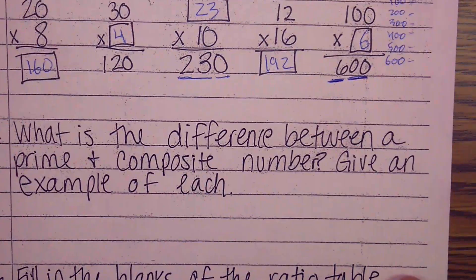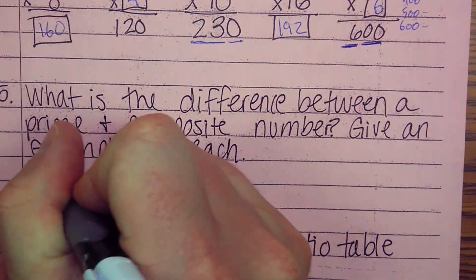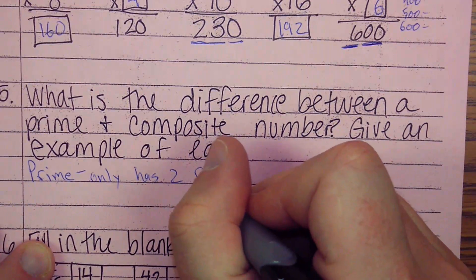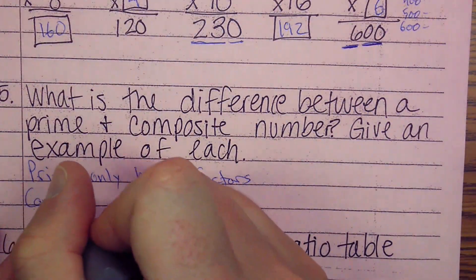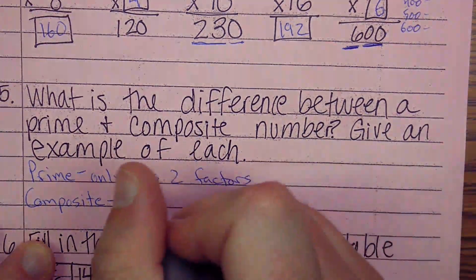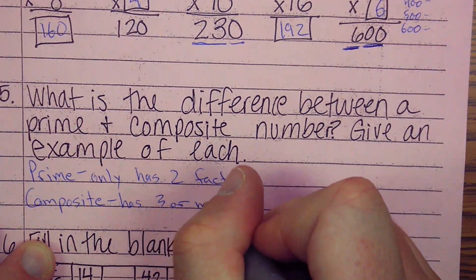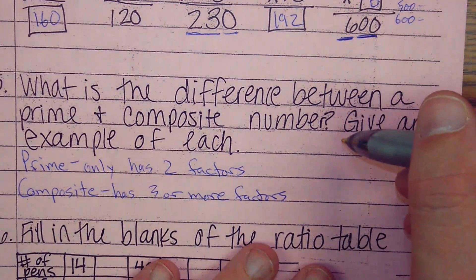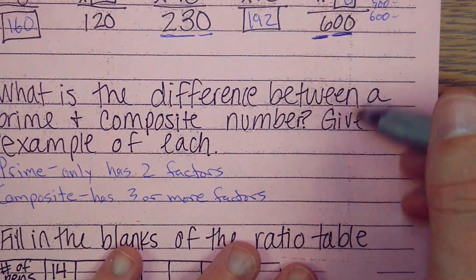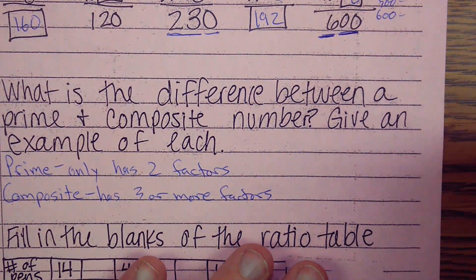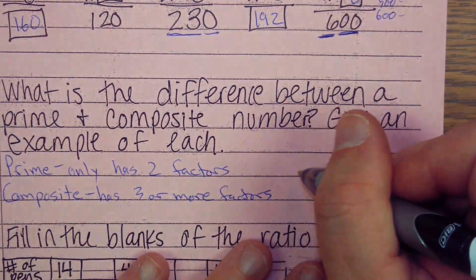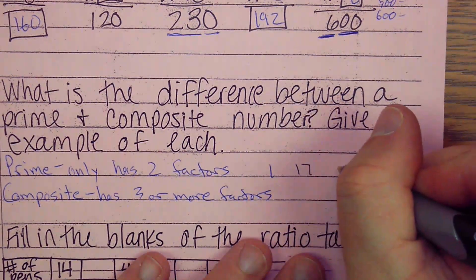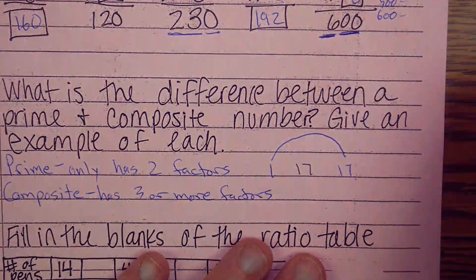Now we're going to talk about the difference between a prime and composite number. How do we know a number's prime? Well, if it's prime, it only has two factors. And we know that a composite number has three or more factors. How can I come up with examples? I'm going to take 17. That's a good number. I'm going to break that into 1 and 17. Draw my rainbow. Boom! Done! That's all there is for 17. It's prime.